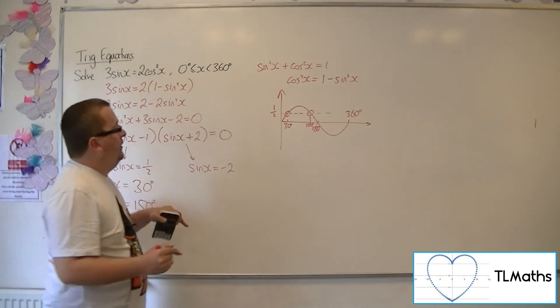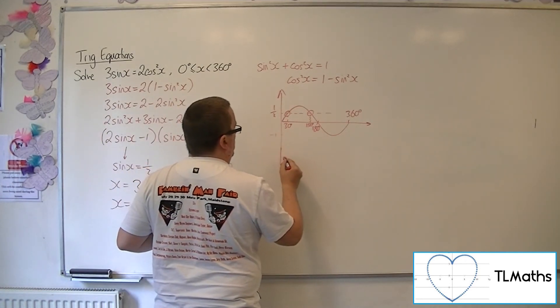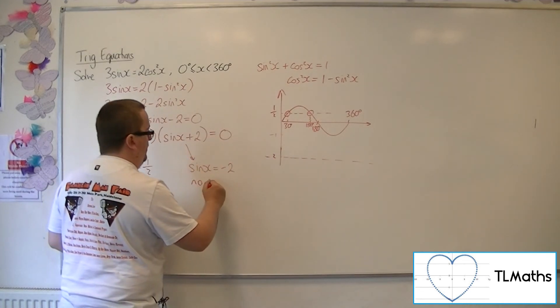Now sine x equals minus 2, well, minus 2, because that's minus 1 there, minus 2 will be all the way down here. And so there are no solutions to this equation.